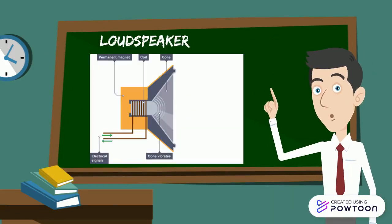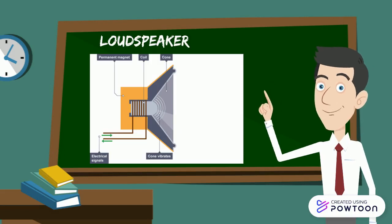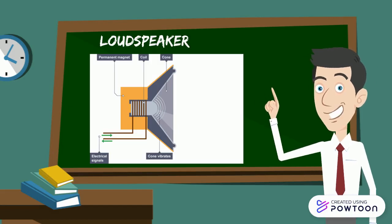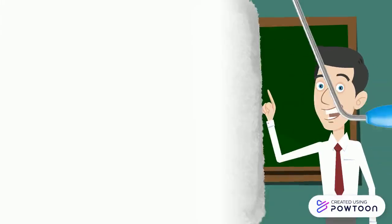What you are seeing right now is a loudspeaker. I have labeled each parts to make it easier to understand. Those parts that have been labeled as permanent magnet coil, cone, electric signal, and cone vibrates. How does it work?